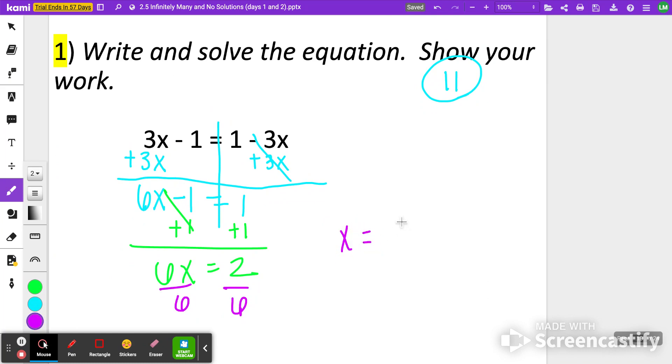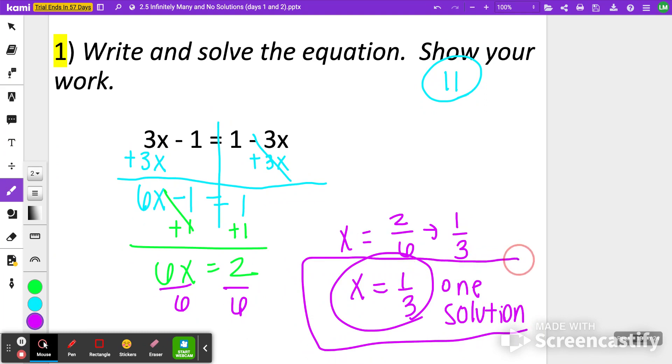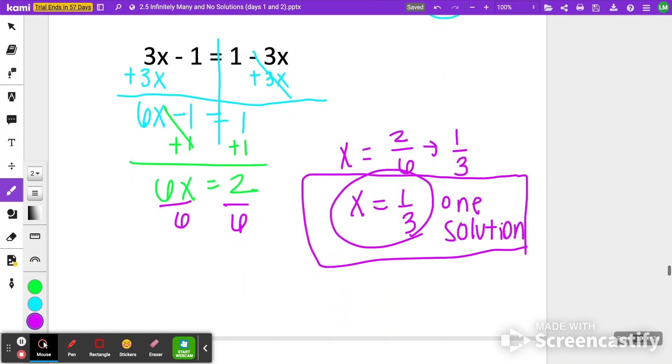So I'm going to get x is equal to 2 divided by 6, which if you simplify that, simplifies to 1 third. So we're going to say x is equal to 1 third. This is representative of one solution. When you can find a solution where x is equal to one number, then that would indicate a singular solution.